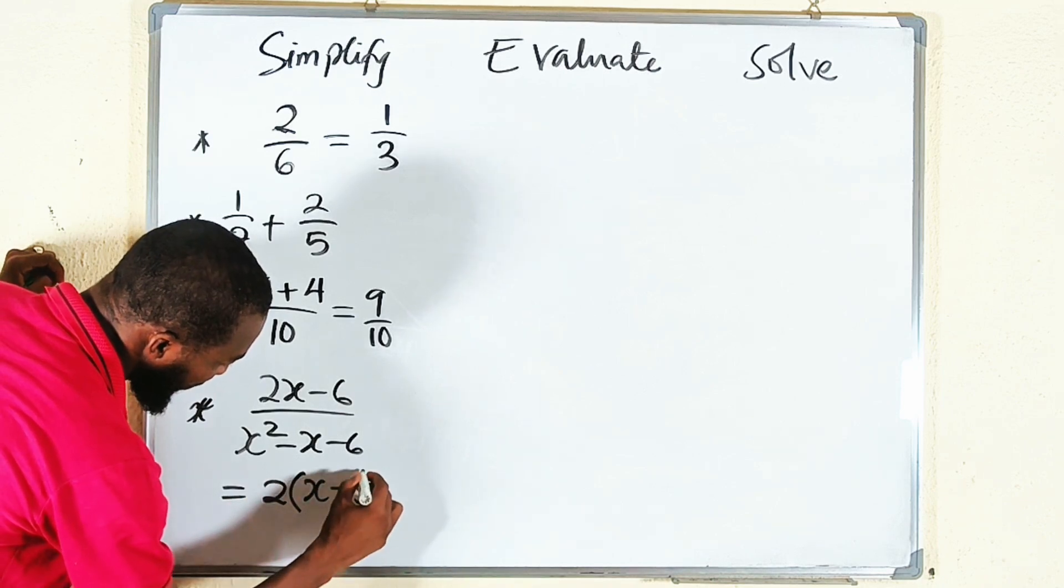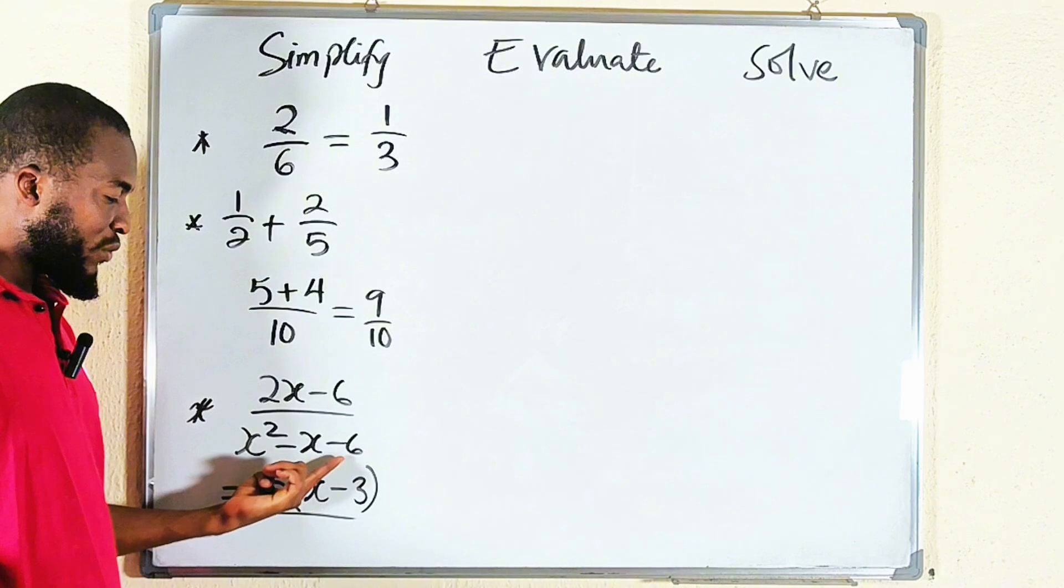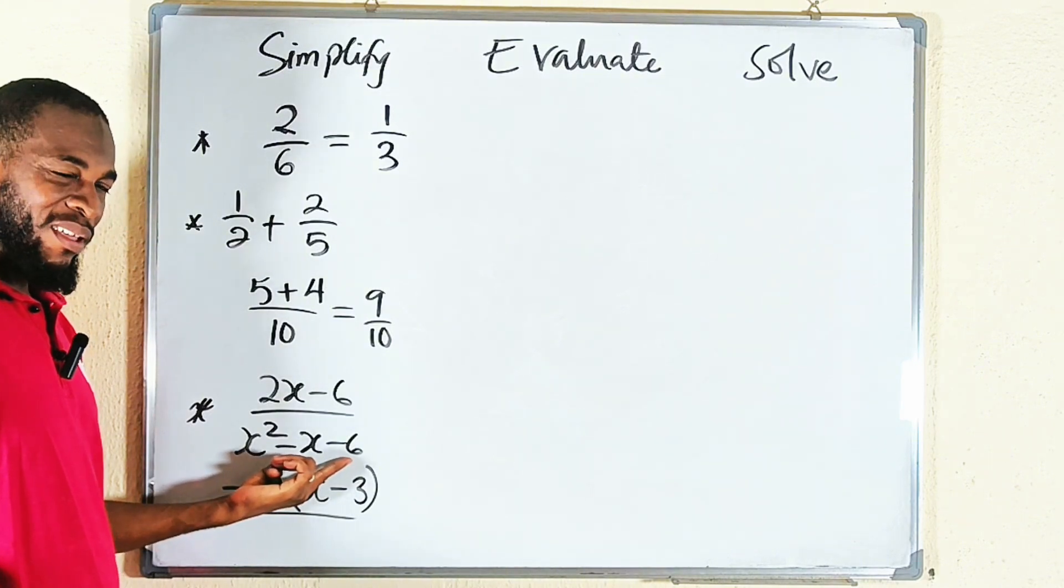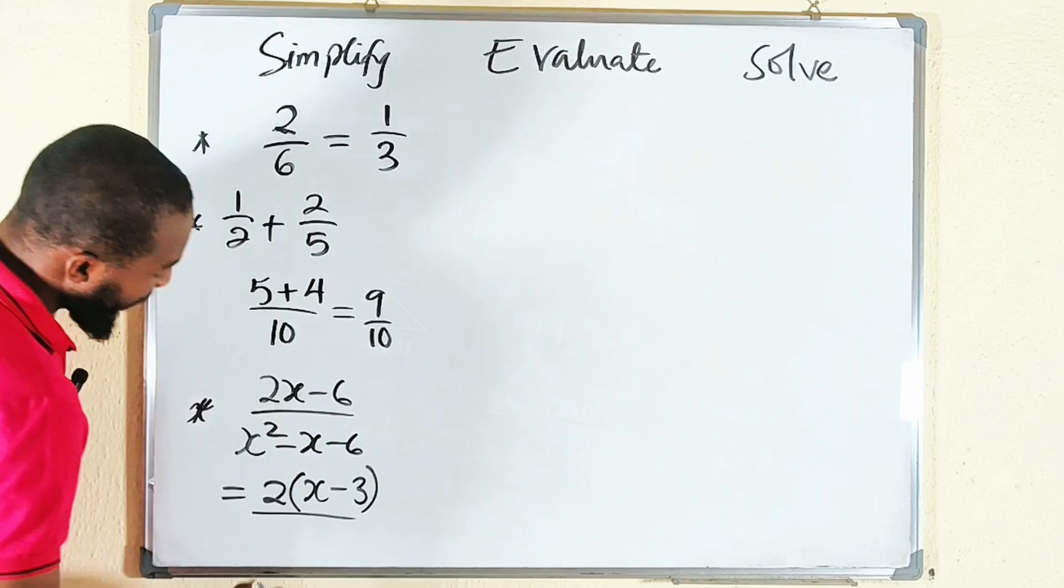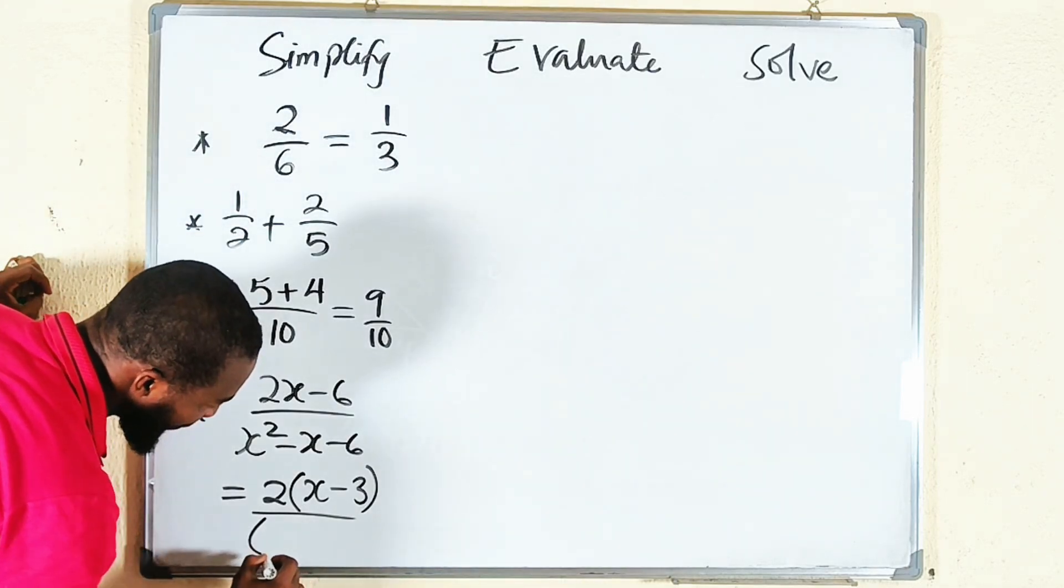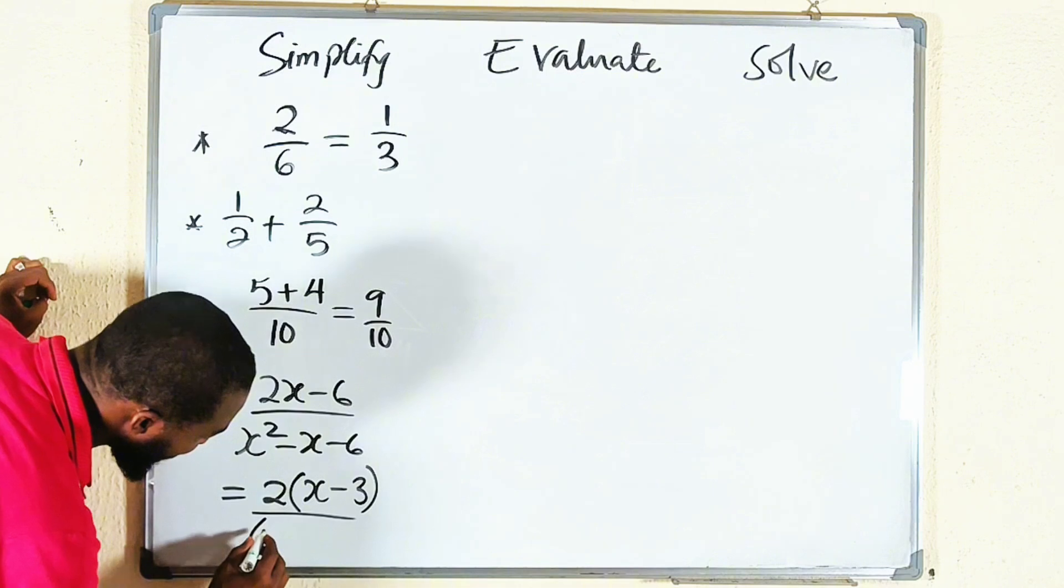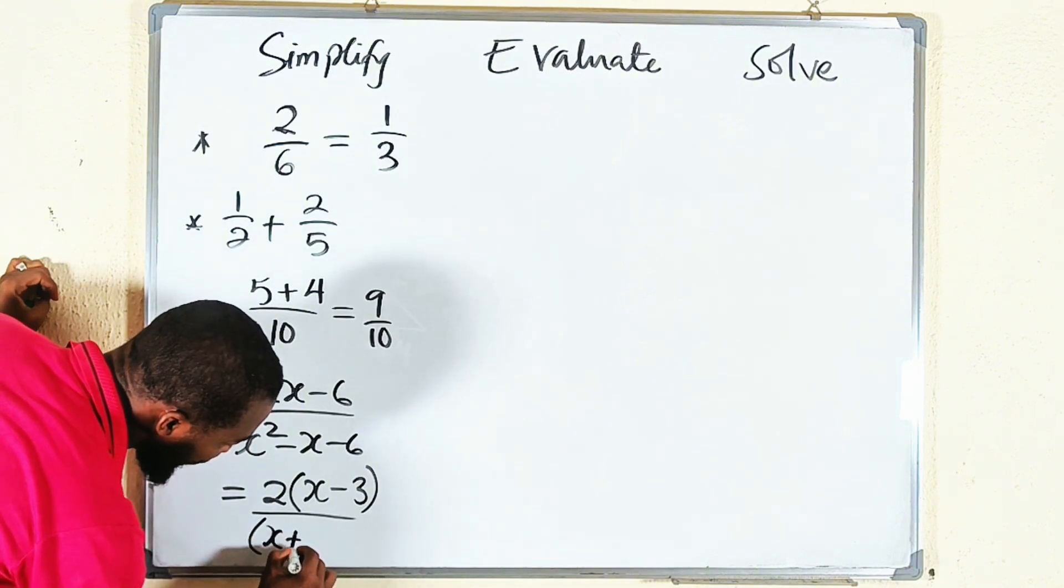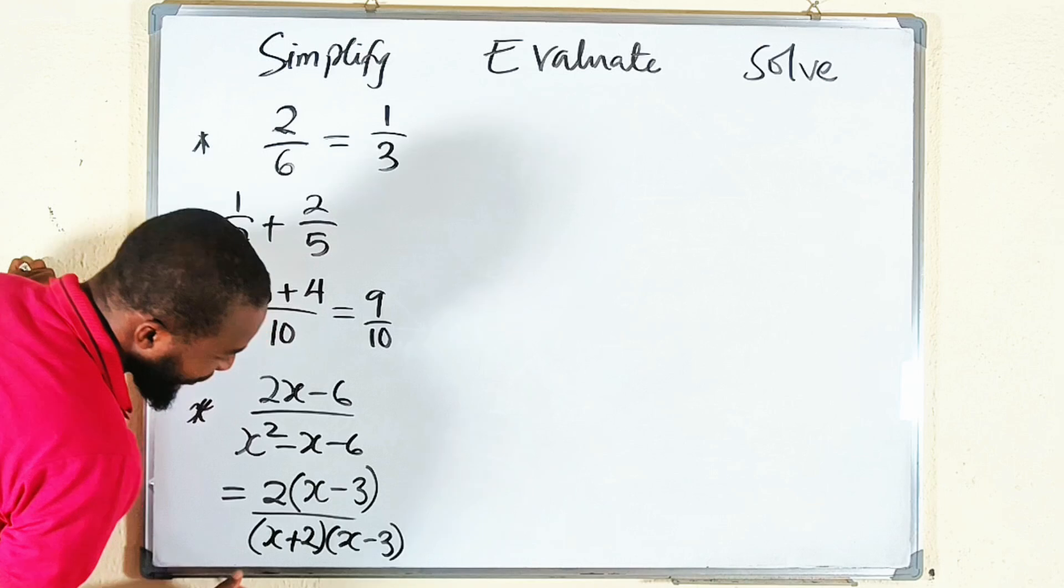At the bottom, this is a quadratic expression. Two numbers you can multiply together to get negative 6 and add to negative 1, which is the coefficient of x—I think we have negative 3 and positive 2. So x plus 2 and x minus 3, something like this.